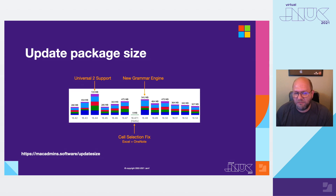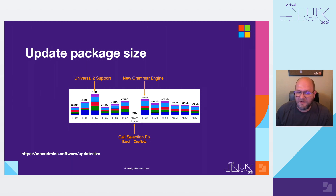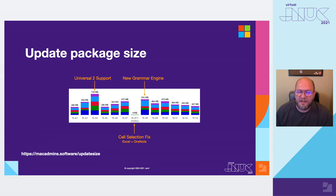Likewise, we overhauled our grammar engine — used for spelling and grammar — in the 16.48 release, which is why Word and Outlook are proportionally larger than the other app updates, because grammar is only used in those two apps. And probably one of the most valued features of our delta mechanism is the ability to produce super small updates when we need to release a hotfix. An out-of-band hotfix is a fairly rare occurrence, but when we do need to push something because of an urgent issue, just like what we had to do in the 16.47.1 update, we were able to patch both Excel and OneNote with a tiny nine-megabyte over-the-wire download.